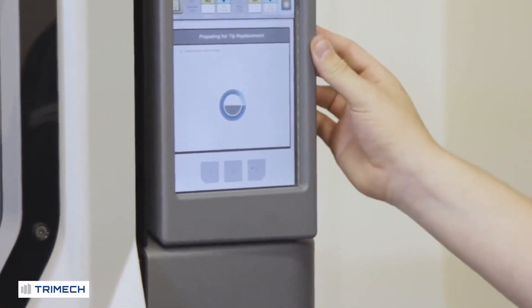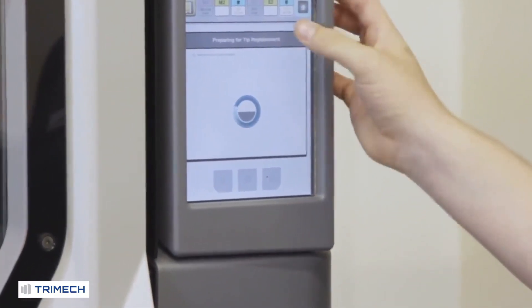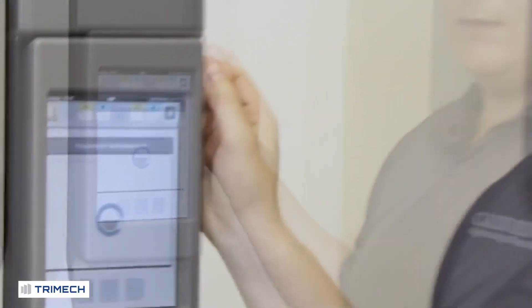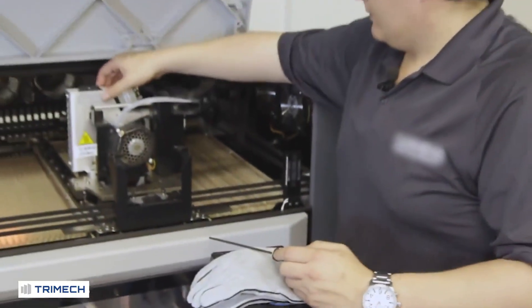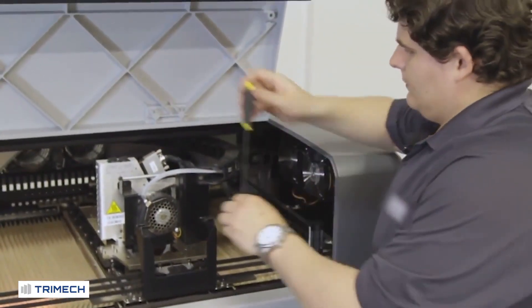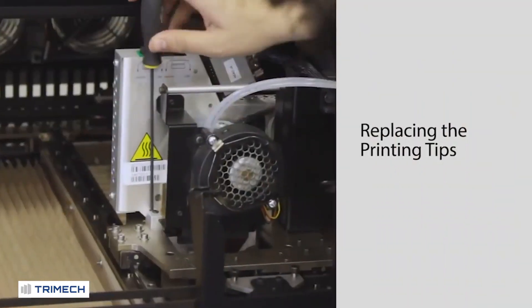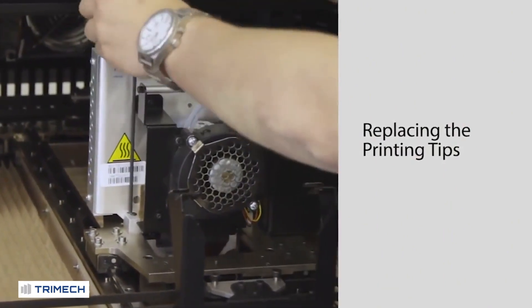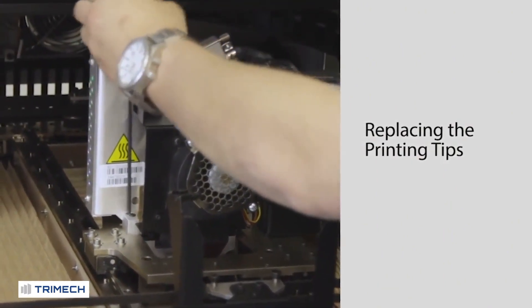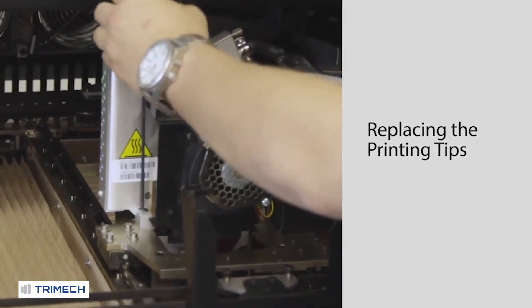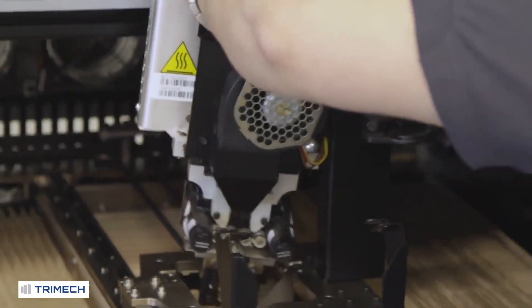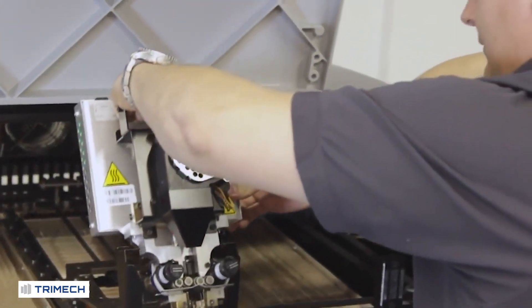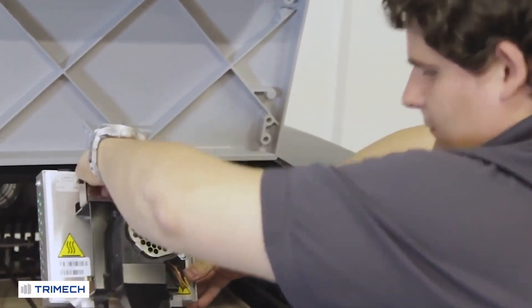So we're going to go ahead and move forward. And the machine is going to prepare for tip replacement. So what it's going to do is move the platen and position the head for the actual tip replacement. So now that the head is in the service position, we can go ahead and use an Allen wrench. And we're going to unscrew the head in two positions. At which point we can safely remove the head and put it onto the service block to safely install the tips.